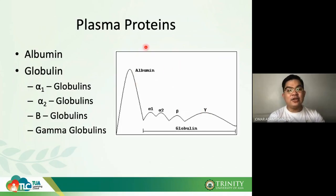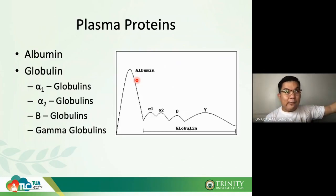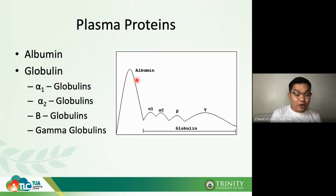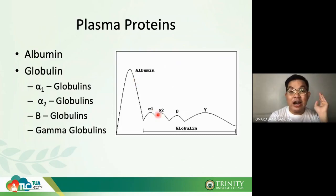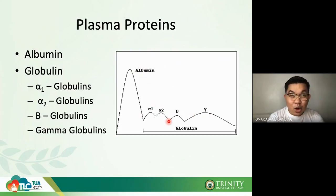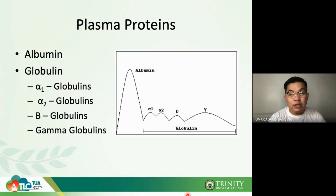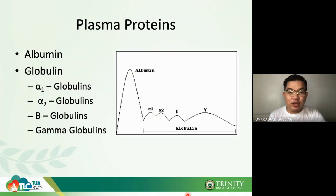Globulins were separated according to their electrophoretic mobility. The fastest — most anodic, most attracted to the anode (positively charged electrode) — is albumin. Second fastest is alpha-1, then alpha-2, then beta, then gamma. This electrophoretic pattern is important for understanding protein diseases.